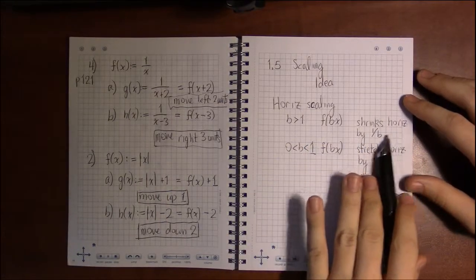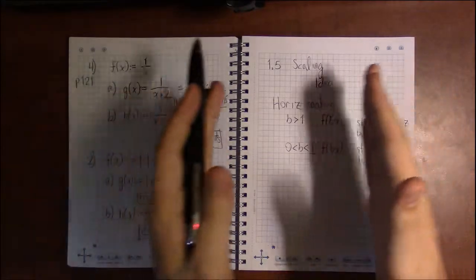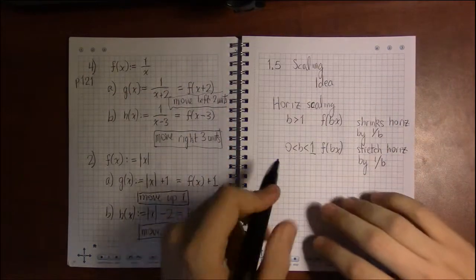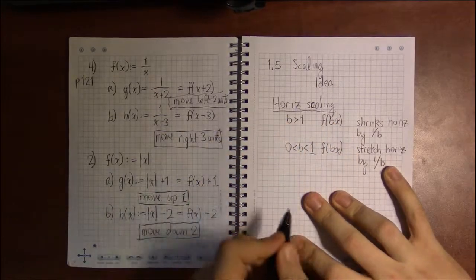Whereas here, if b is 2, it's going to shrink by a half. Now, that was horizontal.